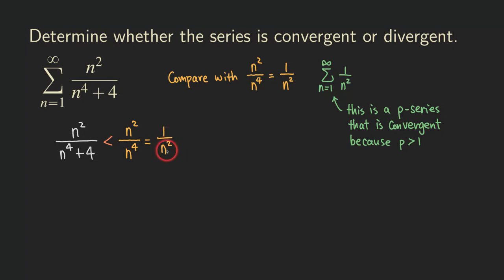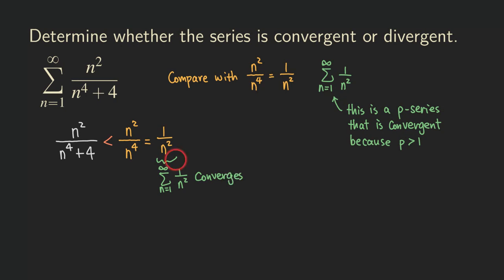Now we know that one over n squared is going to be greater than n squared over n to the fourth plus four. We already know that this p-series, where p equals two, converges. And so this series converges. The smaller series will also converge by the ordinary comparison test.